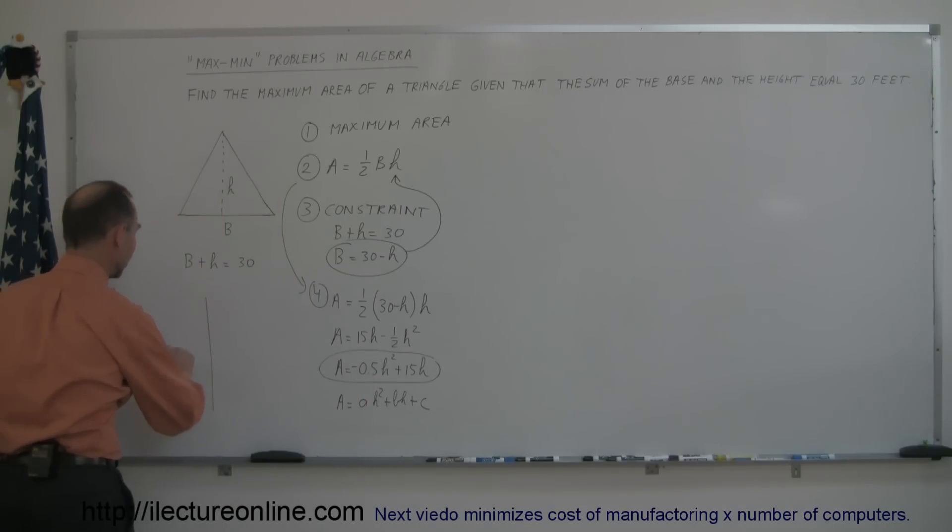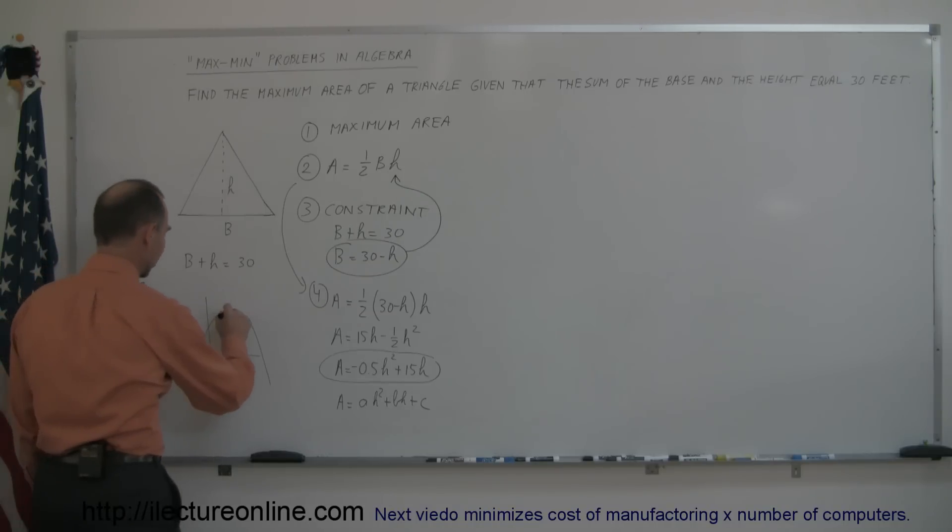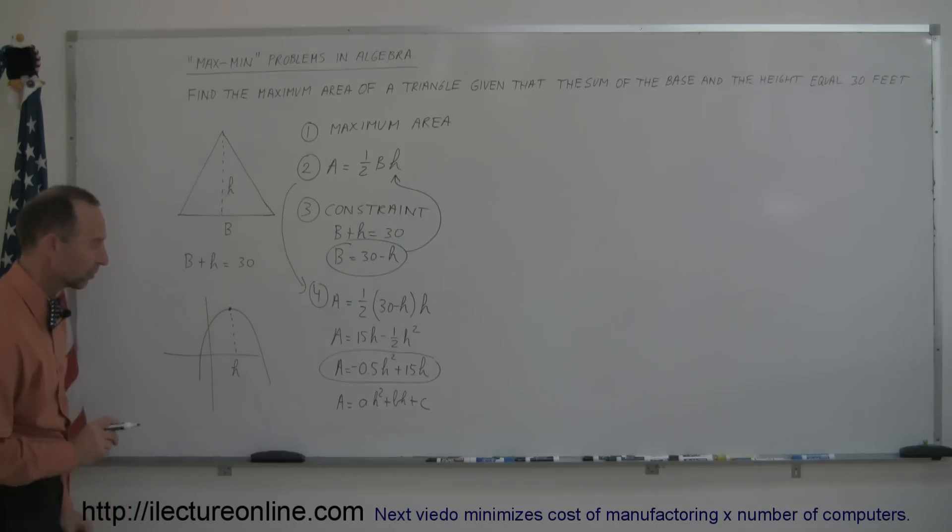That means I'm going to get a parabola that looks something like this, where the parabola opens downward and it has a maximum value somewhere like that. And what we're trying to do in this case is we're trying to find the maximum value, we're trying to find the maximum h in this case.